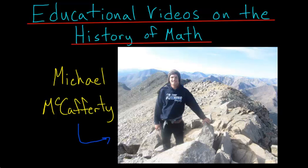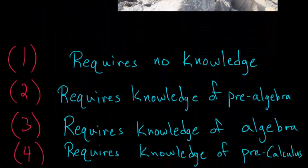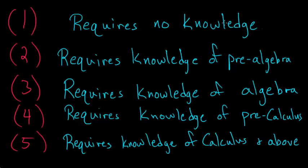In the title of each of my videos, you will see a number in parentheses. This number represents how much knowledge you need to have to fully understand the contents of the video. Videos with a 1 next to them require no prerequisite knowledge, and videos with a 5 next to them require knowledge of at least calculus and possibly even more.